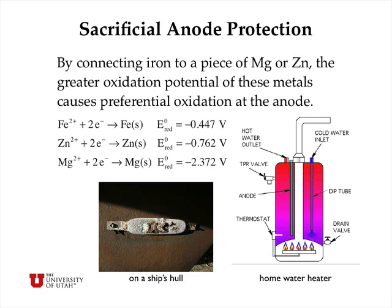The third general strategy for prevention of oxidation of iron and steel is called sacrificial anode protection. In this strategy you electrically connect the iron to a piece of magnesium or zinc, because these metals are more active — they have greater oxidation potentials than iron — and so when in electrical contact they will be the preferred site of the anode. Magnesium, for example, has an oxidation potential of +2.372 volts, which is much larger than the 0.447 volts of iron, so magnesium will be preferentially oxidized whenever it's in electrical contact with iron.